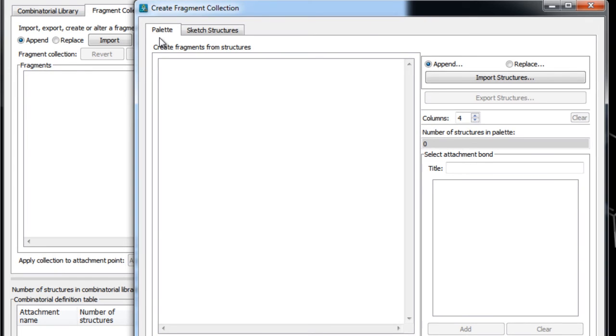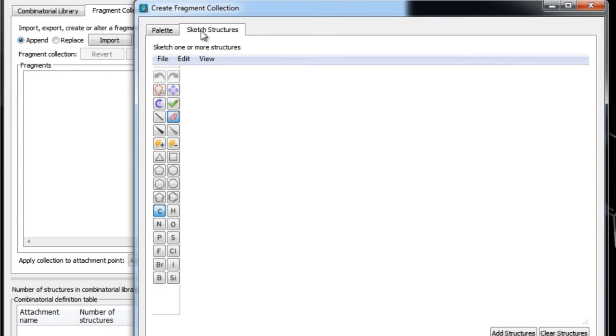The palette tab will list all the structures that we can use to create a fragment for library enumeration. Now as you can see it is blank, so we can either import structures or we can sketch structures manually. For this example, let's sketch a simple fragment.